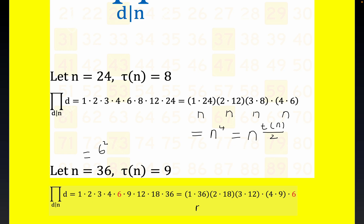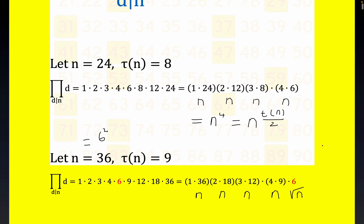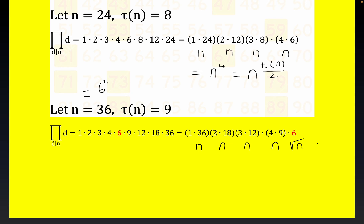But be that as it may, we still have n times n times n times n times the square root of n, okay. Just basic laws of exponents.